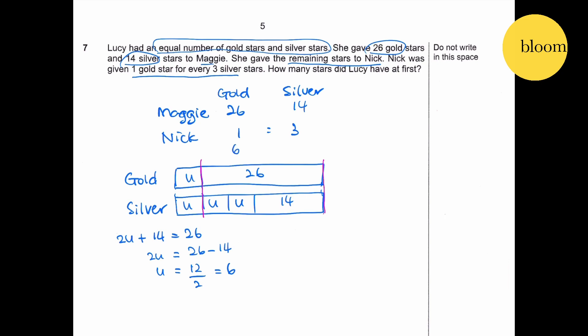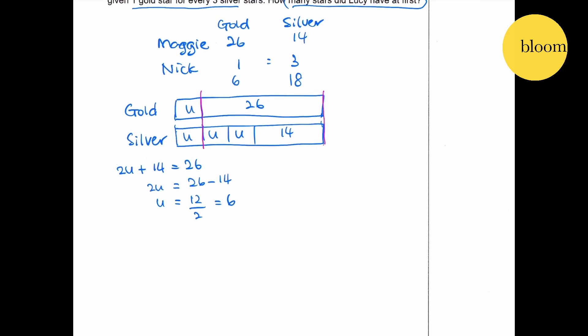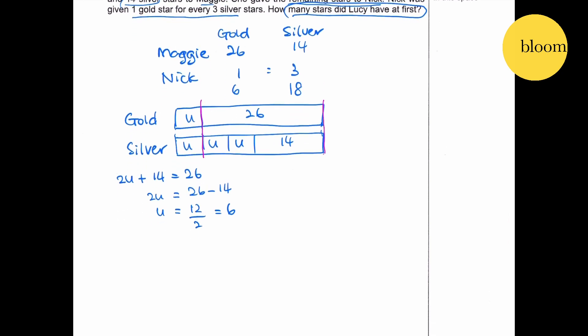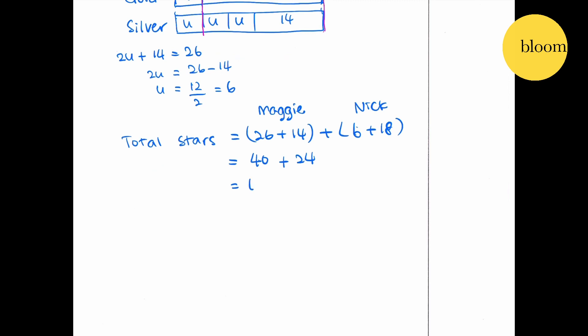So how many stars did Lucy have at first? We just add all of them up. Total stars equals 26 plus 14, this is from Maggie, plus 6 plus 18, this is Nick. 30, 40, plus 24, you get 64.